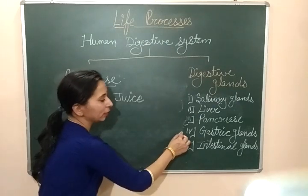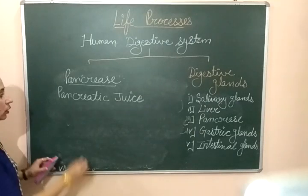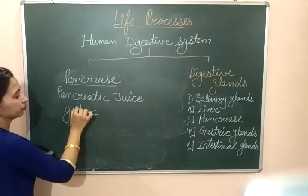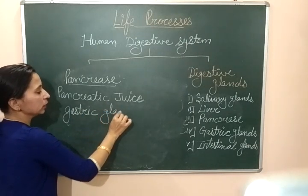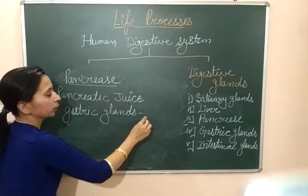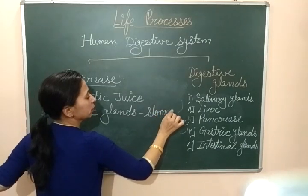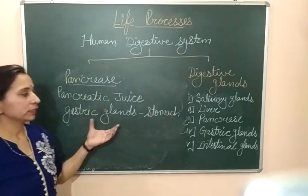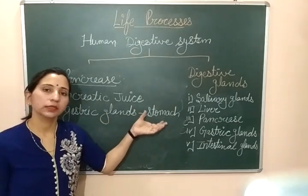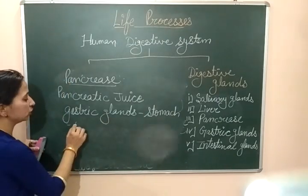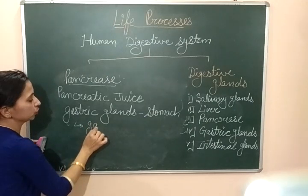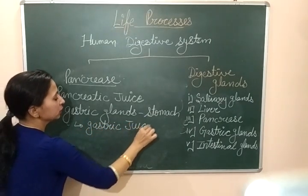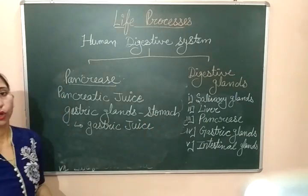The next gland is the gastric gland. Gastric glands are present in the stomach. These are special type glands which secrete a digestive juice known as gastric juice. This gastric juice contains some important components.